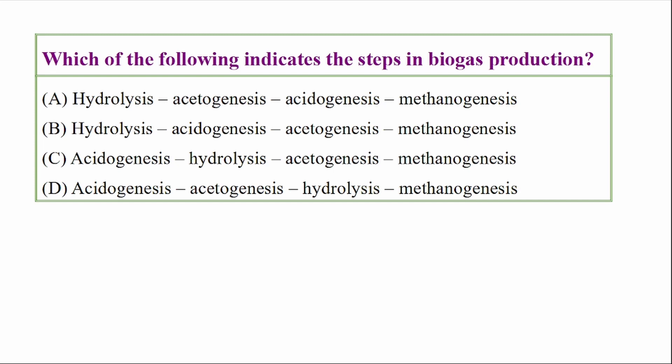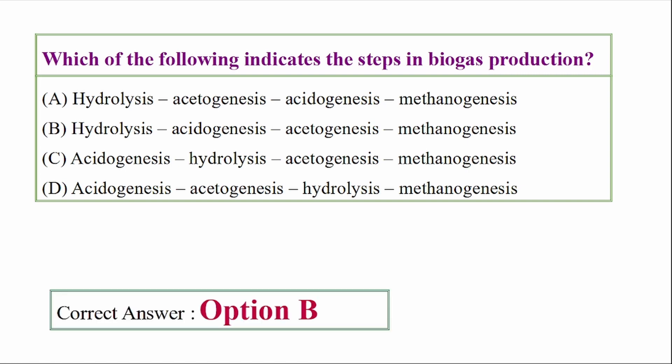Which of the following indicates the steps in biogas production? Options: hydrolysis, acetogenesis, methanogenesis. Answer option B: hydrolysis, acetogenesis, methanogenesis.